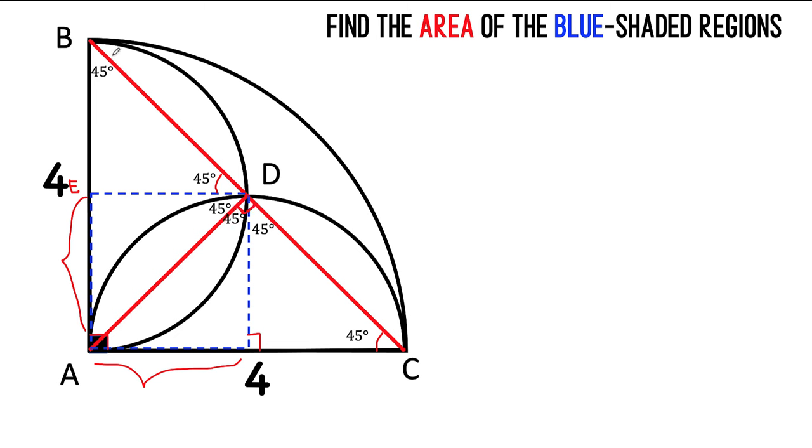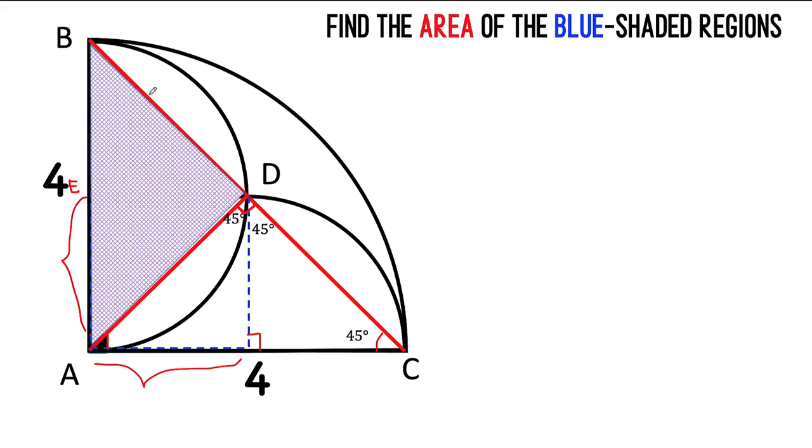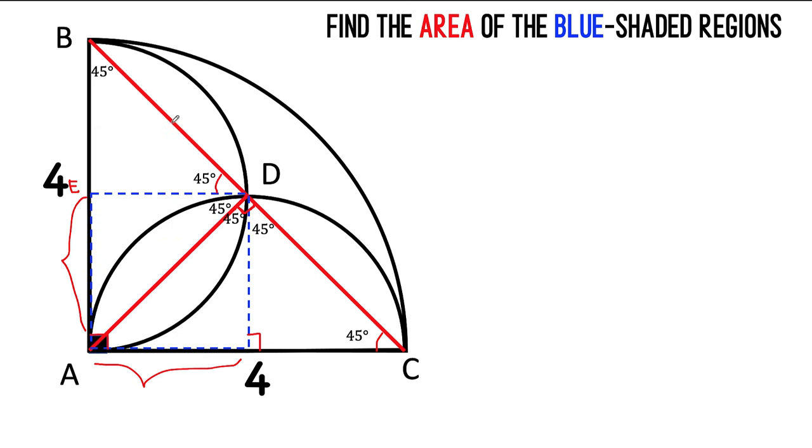That means that segment AD is perpendicular to segment BC at point D. You have here 45, you have 45 degrees here, and you have 90 degrees here. What we have here is an isosceles right triangle BDA, that means side BD must be congruent to side AD.